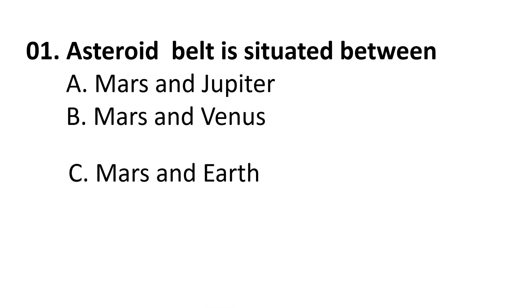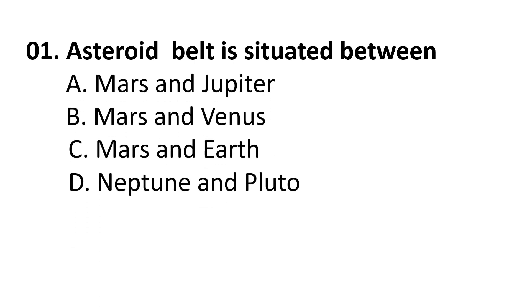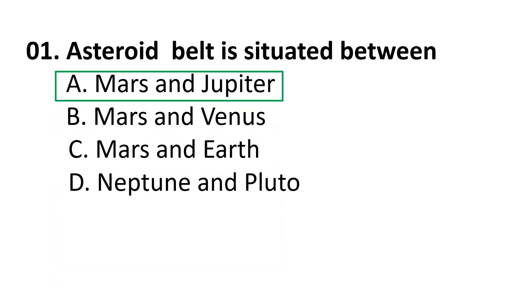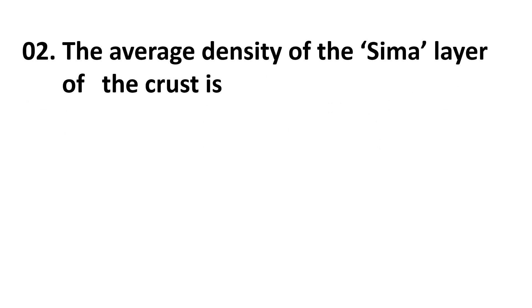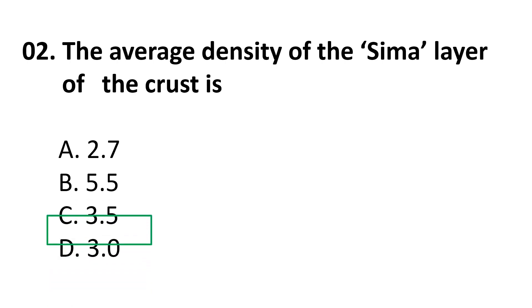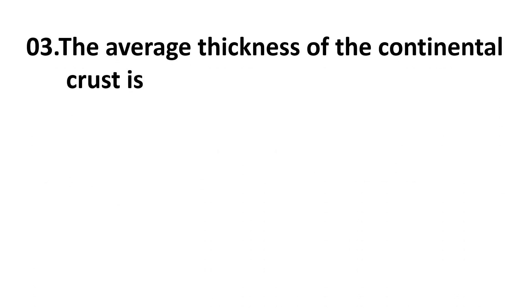B) Mars and Venus, C) Mars and Earth, D) Neptune and Pluto. The correct answer is A: Mars and Jupiter. Coming to the second question: the average density of the SIMA layer of the crust is — choices are: A) 2.7, B) 5.5, C) 3.5, D) 3. The correct answer is A: 2.7.